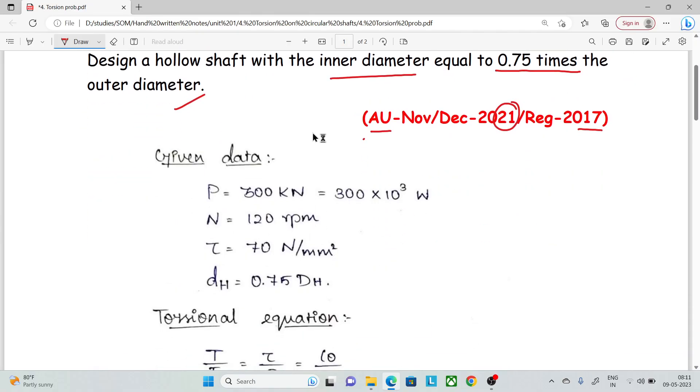Given data: First, power P is 300 kilowatts, that is 300 × 10³ watts. The speed is 120 rpm. Tau shear stress equals 70 N/mm². Internal diameter equals 0.75 times the external diameter.